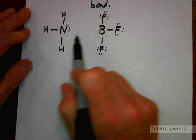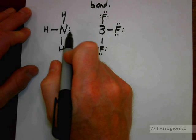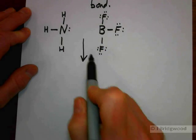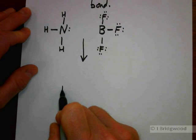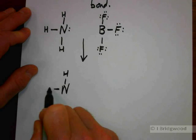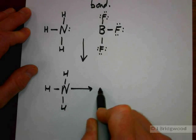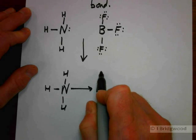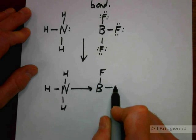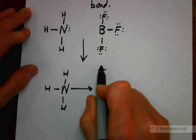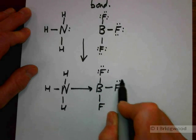Therefore, ammonia can react with this and donate that pair of electrons into its vacant orbital. We can produce our compound, NH3BF3, which looks like this. You'll notice there's our dative covalent bond with its arrow.